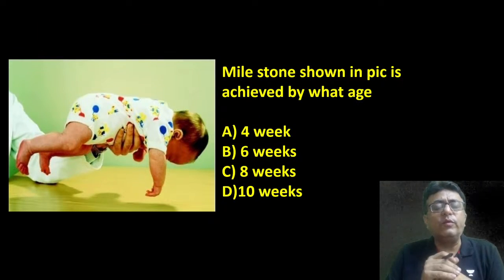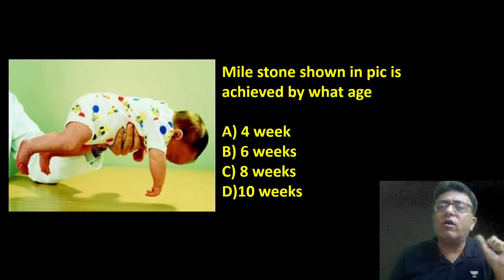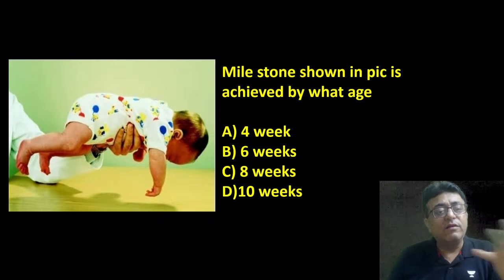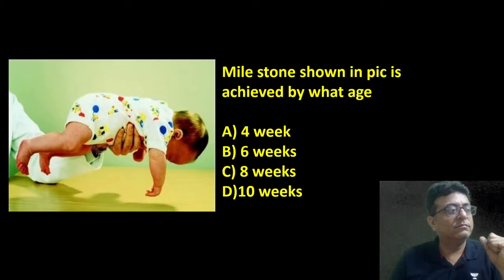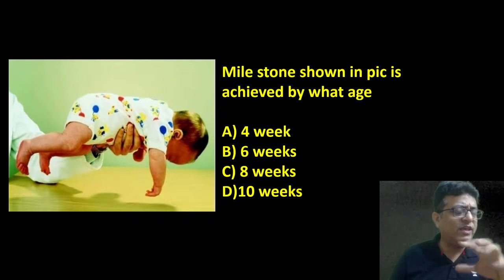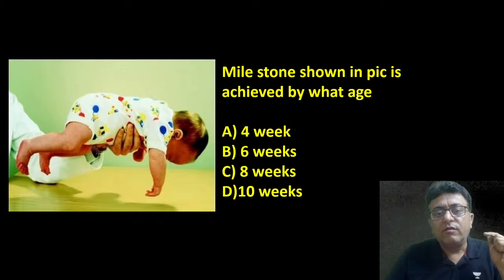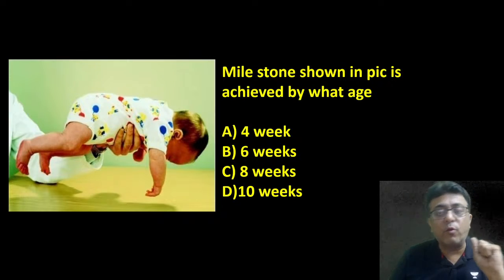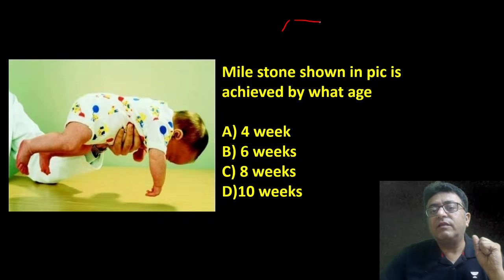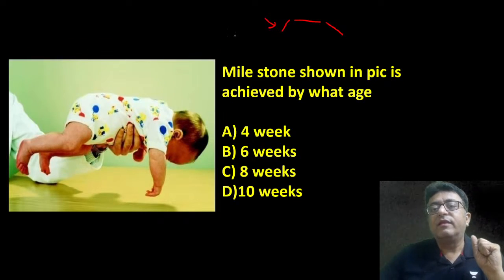Now, milestone. Just interact and it will be better for you. Milestone shown in the picture — achieved by what age? I'll give 15-20 seconds to think. Suppose you make a baby in prone position. If your hand is like this — in first scenario, baby's neck is below the trunk plane. This happens at four weeks of age.